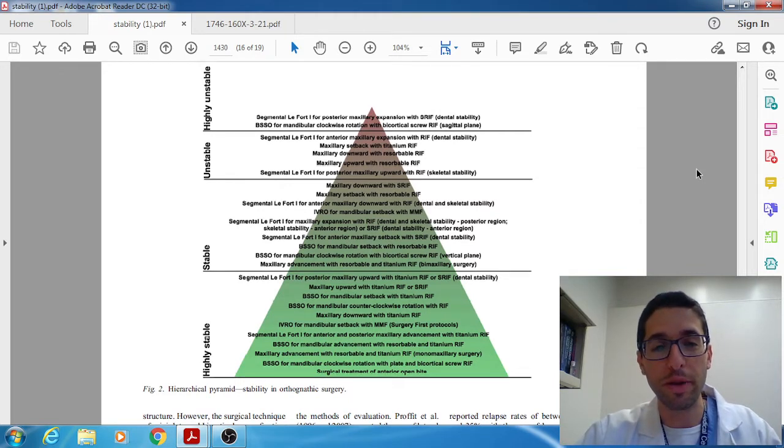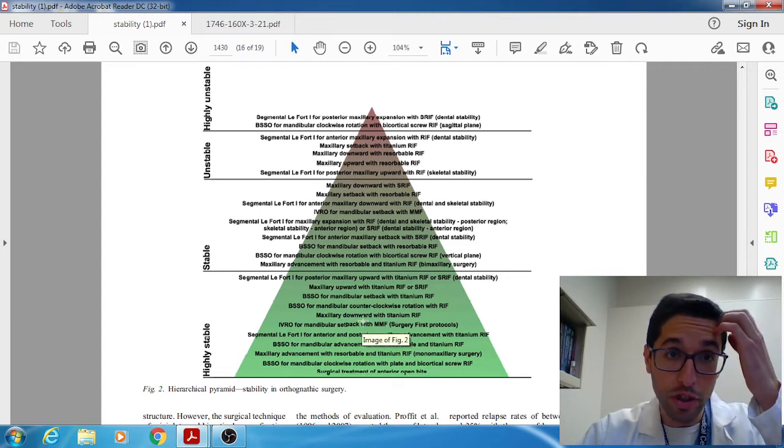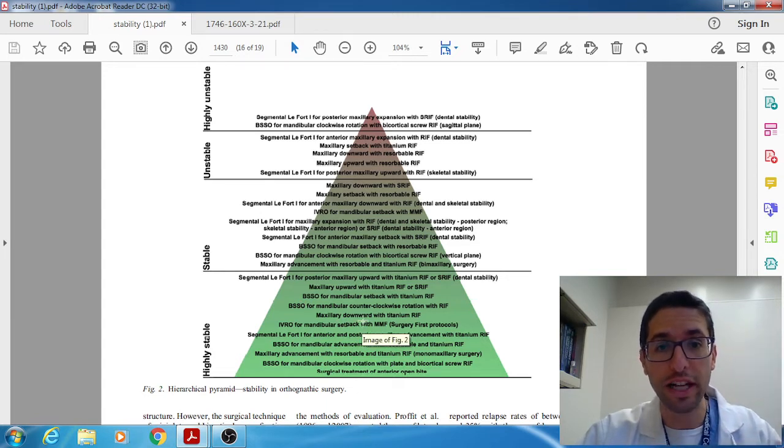And they came out with to my delight a new very a new hierarchy pyramid based on stability and the green is considered highly stable and in their new out in their new hierarchy you'll see the mandibular setback has been resolved and so basically what I was even what Profitt was assuming in 2007 that which is different technique we could overcome that that's been found to be true.